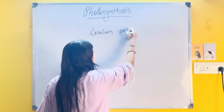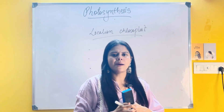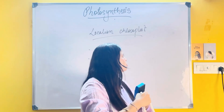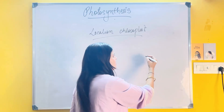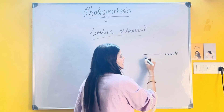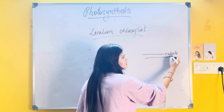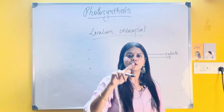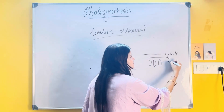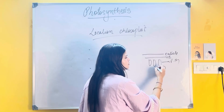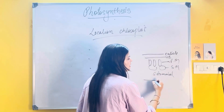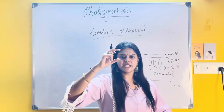Coming to the location of chloroplast. In the transpiration chapter, all of you have seen the diagram of the vertical section of a leaf. In the vertical section of a leaf, the outermost layer is the cuticle, then comes the upper epidermis, then mesophyll cells. There are two types of mesophyll cells: rod-like cells called palisade mesophylls, and spongy mesophylls. Then there is the substomatal space, and finally the lower epidermis.